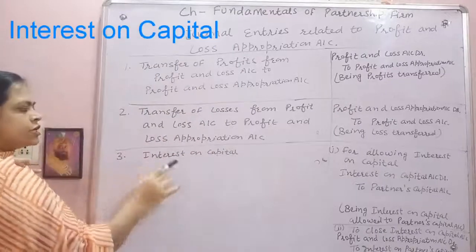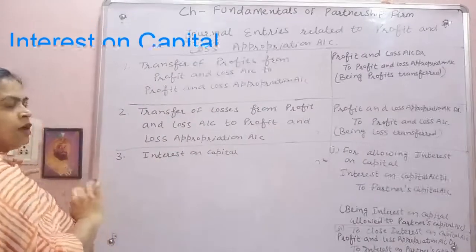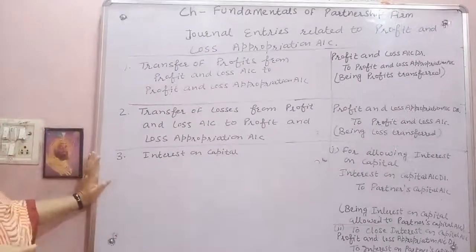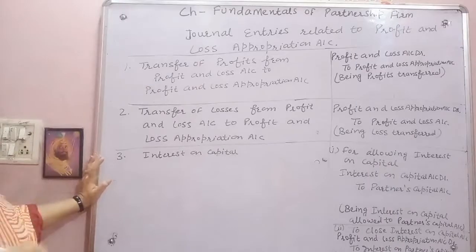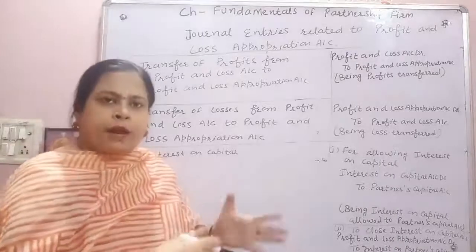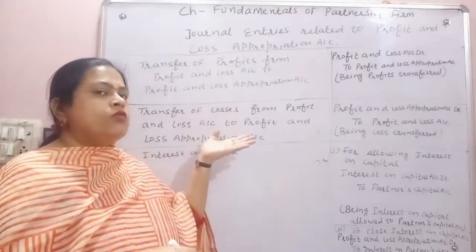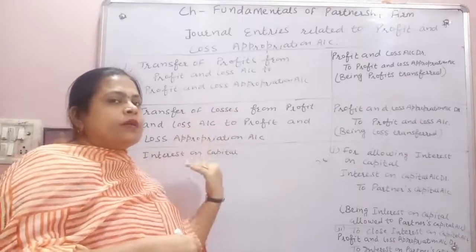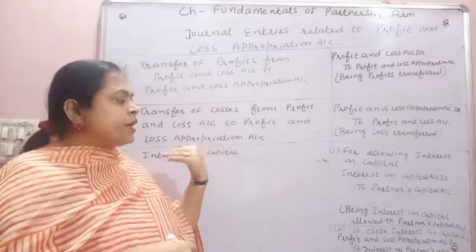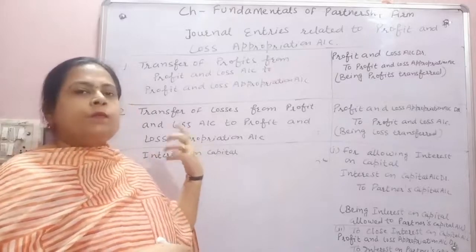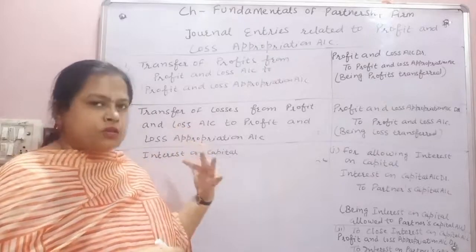Third point is interest on capital. When we made the profit and loss appropriation account, on the debit side was written 'To Interest on Capital.' So one entry becomes: Profit and Loss Appropriation Account debit to Interest on Capital.